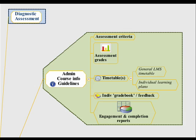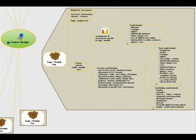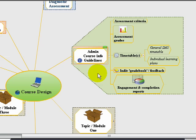The administration, course info, and guidelines area is really important. This would be a one-stop shop — where to find assessment criteria, grades, rubrics, learning outcomes, and timetables for the whole semester or year-long course. Students would also be able to look at their grade books and gather feedback, while faculty can see things like engagement and completion reports for the learning management system. The topic or content area looks relatively complex, but it's an overview of what could be used in a flexible learning course, with all its aspects, choices, and different tools to support students and faculty.